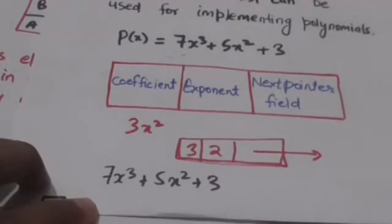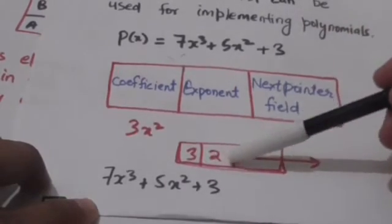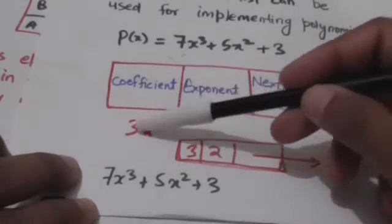Suppose there is a term, for example 3x². Now this is the node which represents the term 3x².